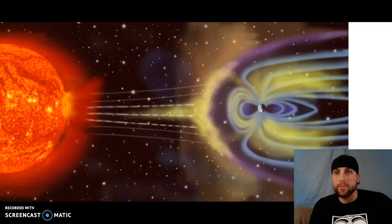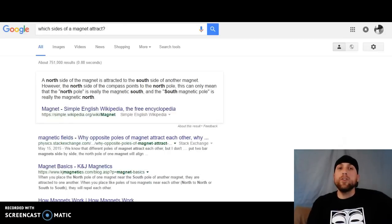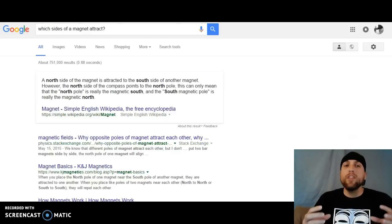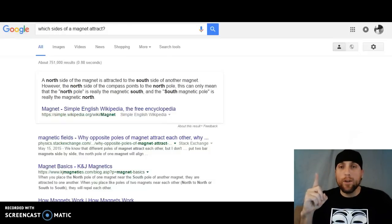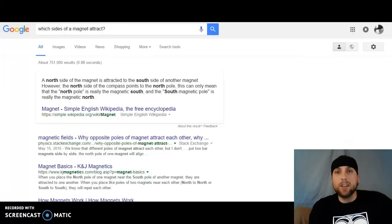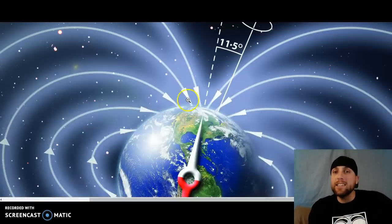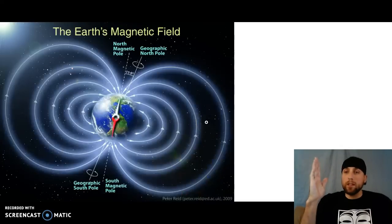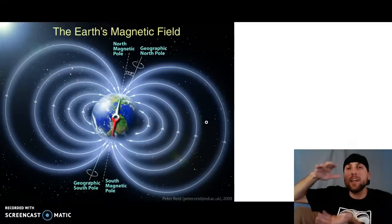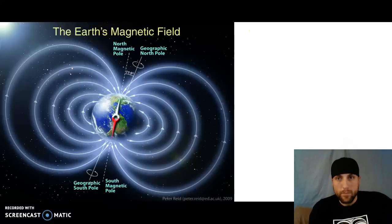Let me read you something. It says the north side of a magnet is attracted to the south side of another magnet. Now I was doing my research, I wanted to see how magnets work, you know, just wanted to double check. However, the north side of a compass points towards the north pole. This can only mean that the north pole is really the magnetic south and that the south magnetic pole is really the magnetic north, which is the exact opposite of what we are shown here. It's the exact opposite of what we've been taught. Our north is really the magnetic south. So once again, reality and truth is flipped 180, it's turned upside down and it's inverted.